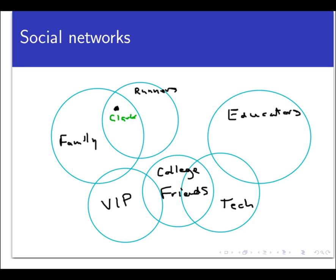For example, my family members might want to see those photos of all my kids that I upload, but people I know through work might not. So recently social networks have introduced this feature where you can assign people you know to different groups, and so you can target your status update to the group.